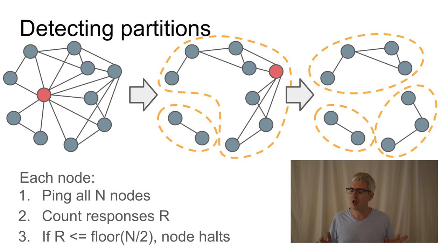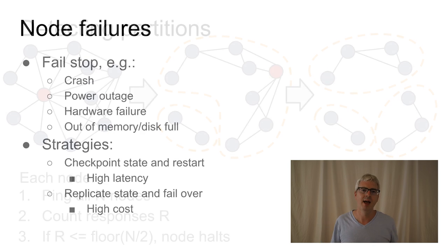So that's what we have to worry about from a networking side, which is when links go down, do we lose the ability to communicate between various parts of our distributed system and how do we react to it? Let's talk about the individual nodes. How can they fail?